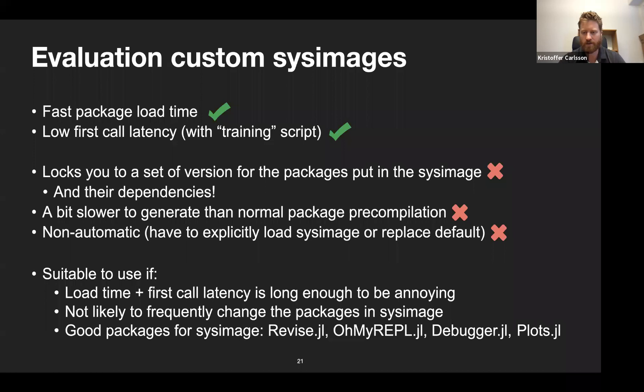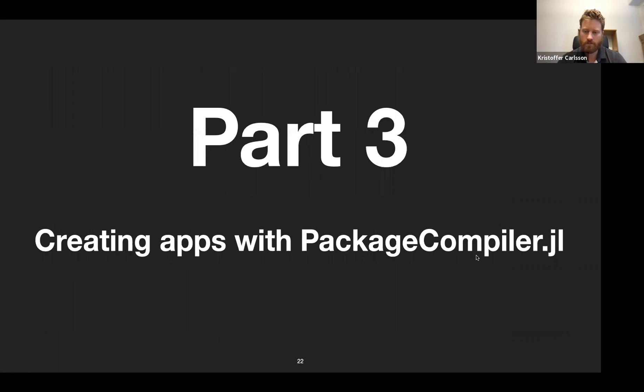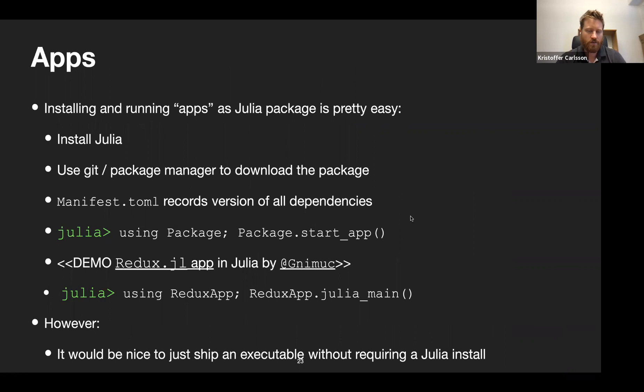Let's move on to part three: creating apps with PackageCompiler. The first part was sysimages for latency reduction; now it's creating standalone applications. Installing and running an app as a Julia package the normal way is already fairly easy — install Julia, use git or the package manager to download the package, if there's a manifest it records all dependency versions, you instantiate them and start the app. This works without PackageCompiler.